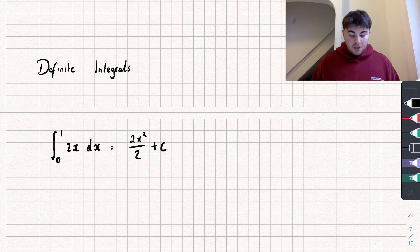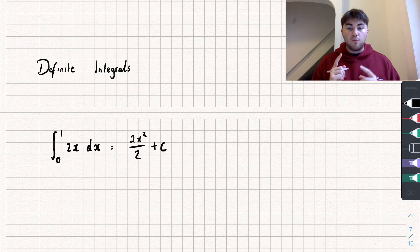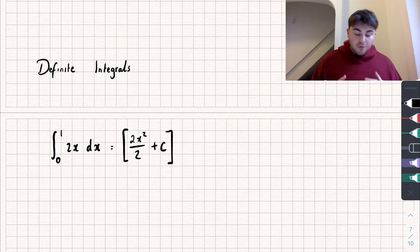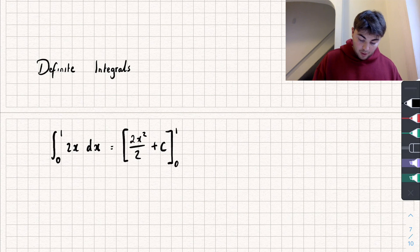So the difference is now because we've got these bounds or limits and this is a definite integral, we have one more step to our working. We need to add square brackets around this and then we write the limits on the right hand side so between 0 and 1.